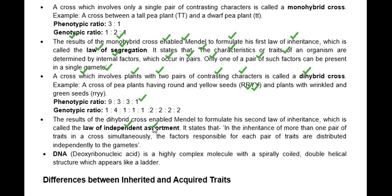The results of the dihybrid cross led Mendel to formulate the law of independent assortment. For example, in a round and yellow seed, the round character is dominant and the yellow character is also dominant. If the seed is wrinkled, it does not mean the color must also be green — the two characters are independent of each other.